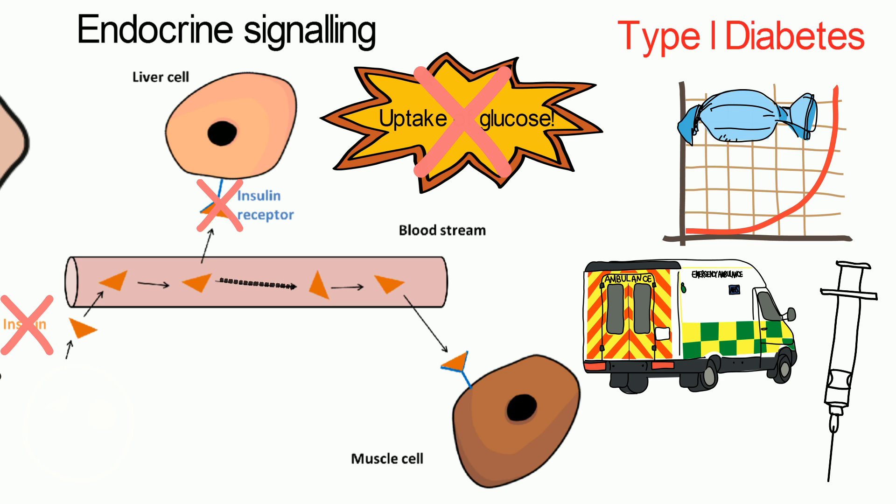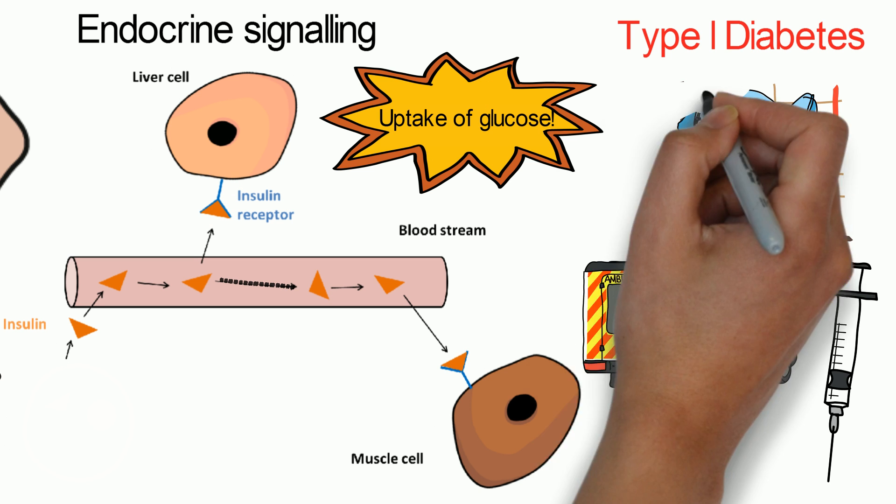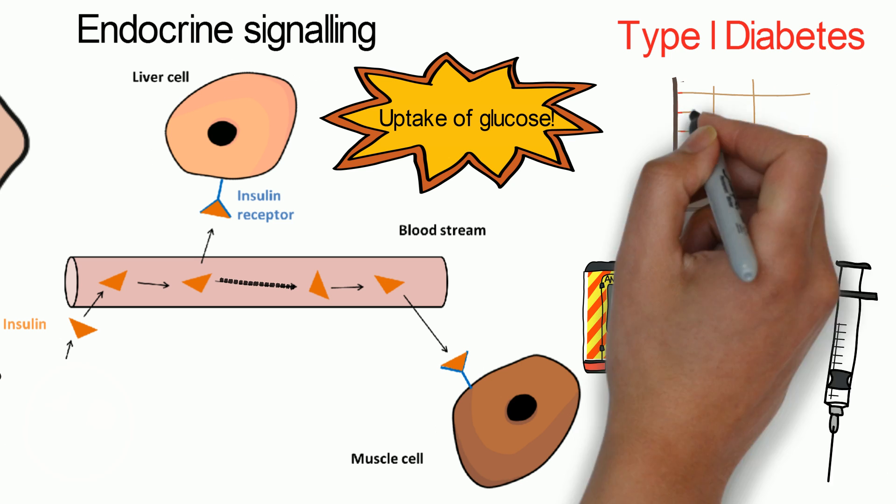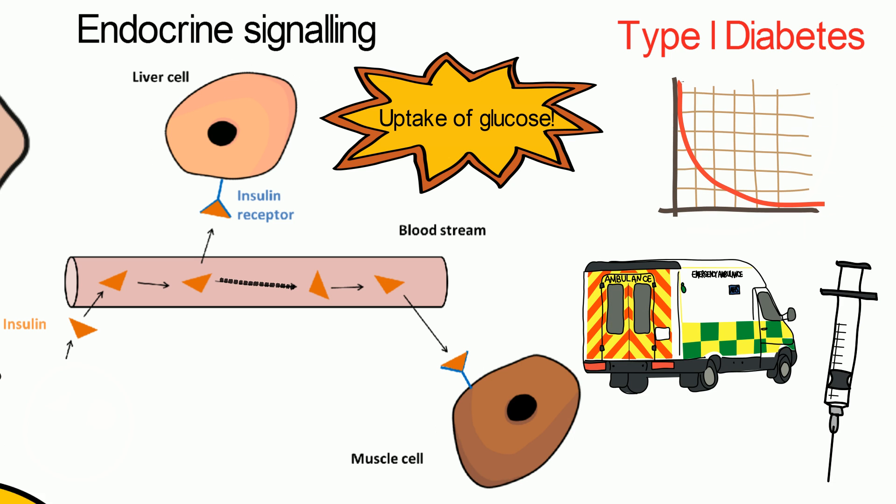Hence, patients have to perform insulin injections after meals to help re-establish cell signaling to the target cells. This brings the blood glucose level down and the disease is managed.